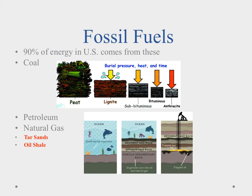Let's take a quick look at fossil fuels. From the name, they're fuels that come from fossils — remains of once living organisms. Ninety percent of our energy in the United States comes from fossil fuels, so we're heavily fossil fuel dependent. The biggest source used for producing electricity is coal. Coal starts off as plants, like peat in a bog. Burial pressure, heat from depth inside the earth, and time squeeze it down through lignite, then bituminous coal, and then anthracite coal. It takes millions of years to form, and then we collect it through mining and burn it to make electricity.